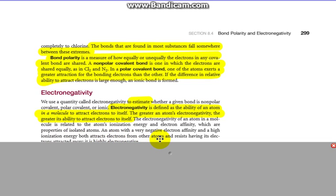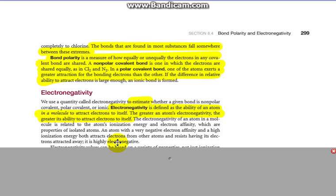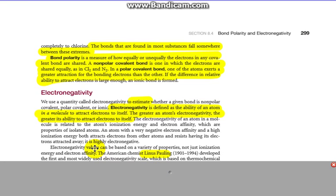In an atom with a very negative electron affinity, so wanting an electron, and a high ionization energy, both attracts electrons from other atoms and resists having its electrons pulled away, and therefore it has a high electronegativity. When it's within a molecule, it wants to have the electron in its area more often.